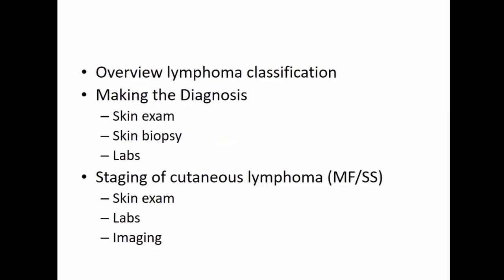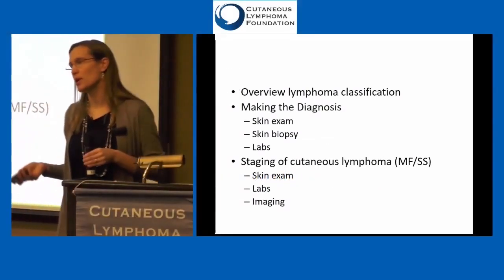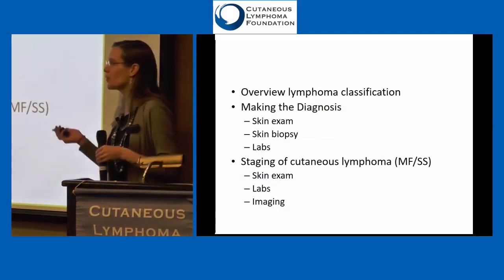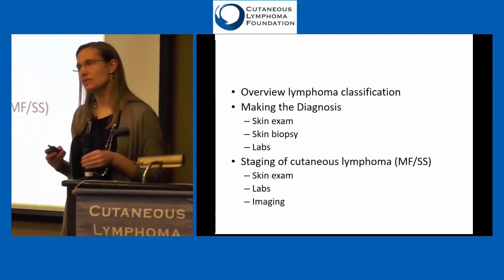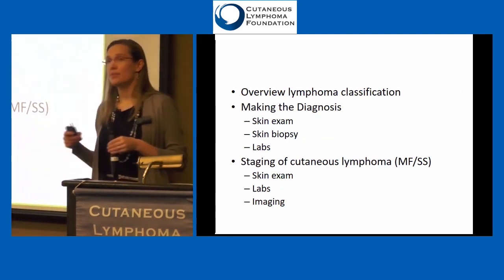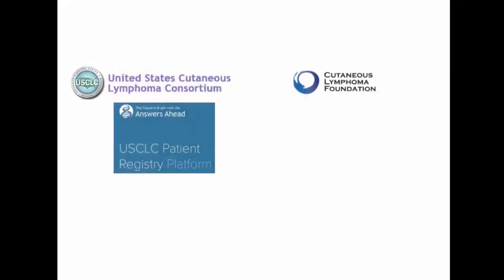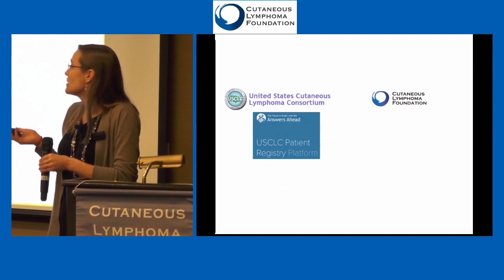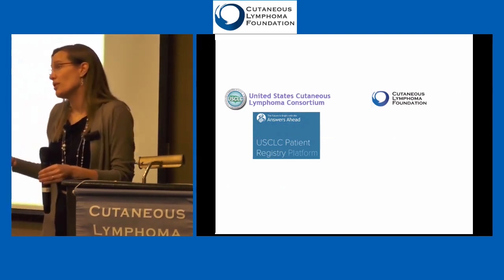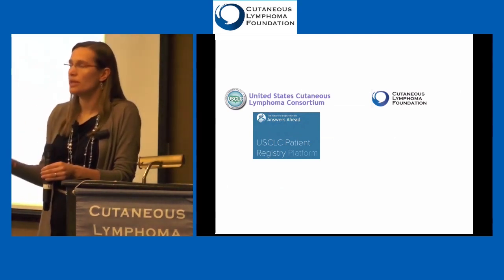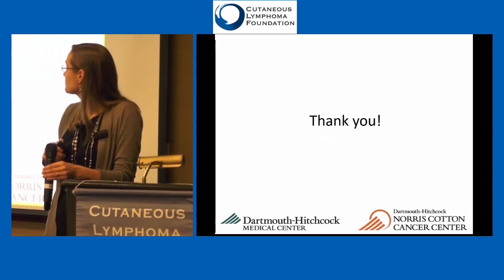This particular patient had radiation and the whole thing went away without recurrence. So that's the overview of lymphoma classification and what we do for making the diagnosis — the skin exam, lab work, and imaging for staging. Staging is most important for MF and Sézary syndrome and is less helpful for all the other types of cutaneous lymphomas. Thank you to the cutaneous lymphoma foundation — the books we hand out to patients are so valuable, and having great online resources is important. If anyone is involved with a provider doing the USCLC patient registry, it's a great way for us to gather more information to help future patients — the more information we gather, the more we learn.